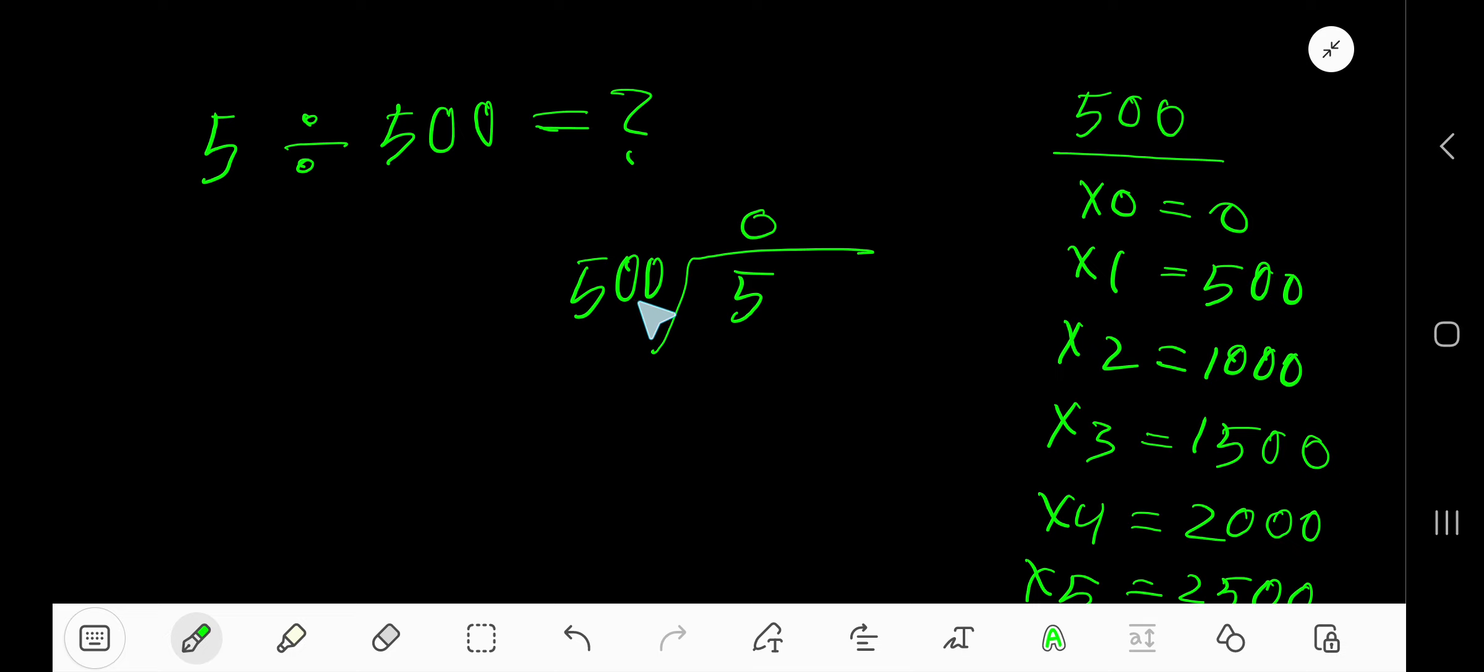0 times 500 is 0. Subtract 5 minus 0 equals 5. To continue this division process, convert this whole number into a decimal number. Take a decimal point, then add any number of zeros. Bring down the first zero, so you are getting 50.